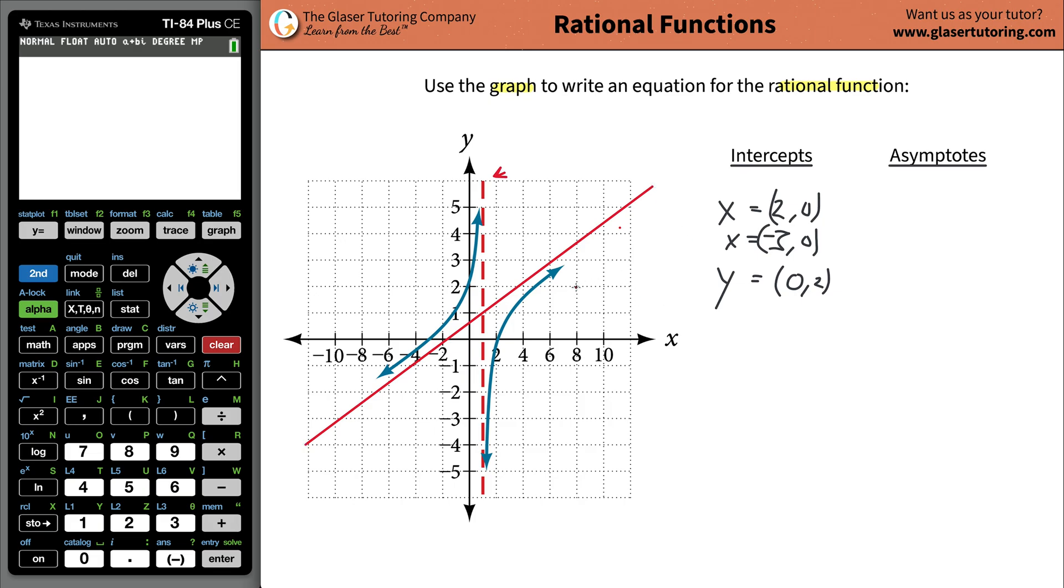It's somewhere around here or so, but we don't have to worry about it. It's not going to help us write the equation. So we're just going to focus on the vertical asymptote.